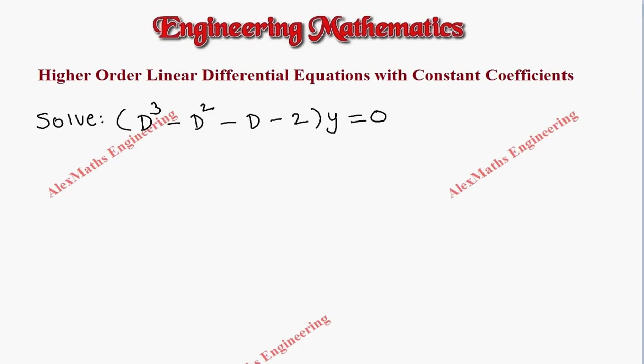Hi students, this is Alex here. In this problem, we need to solve (D³ - D² - D - 2)y = 0.